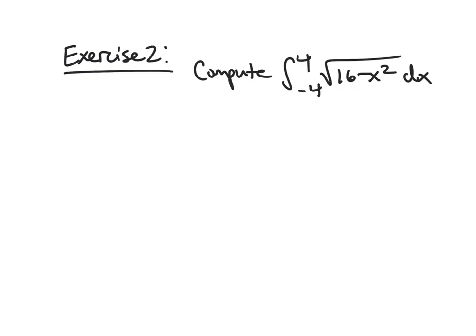So for your second exercise, I want you to look at the integral from negative 4 to 4 of the square root of 16 minus x squared. And you should be using a picture and some geometry here in order to calculate this. You want to be thinking in terms of area. All right. Thank you for watching.